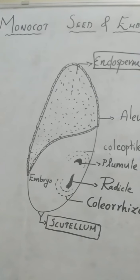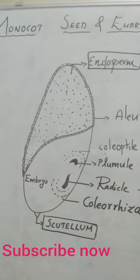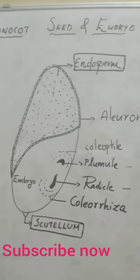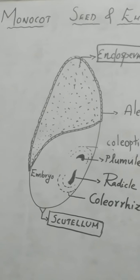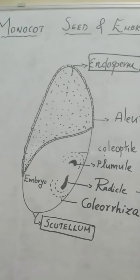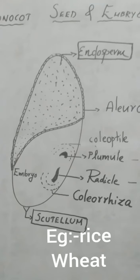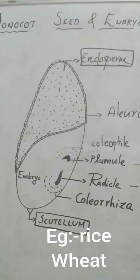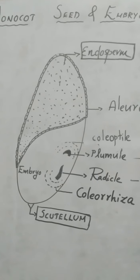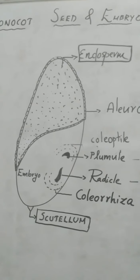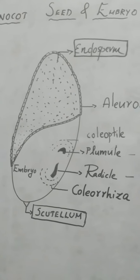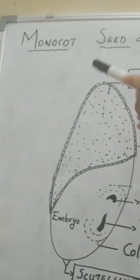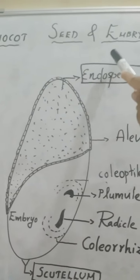Today's topic is monocot seed and embryo. We have already seen the structure of dicot seed, how the dicot embryo is situated inside, and what happens to the embryo during seed germination. Today we will focus on monocot seed and monocot embryo.